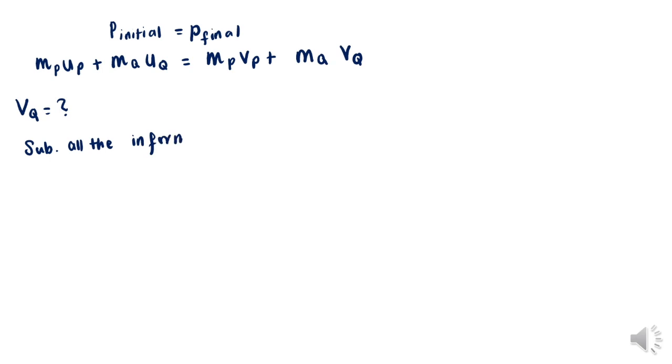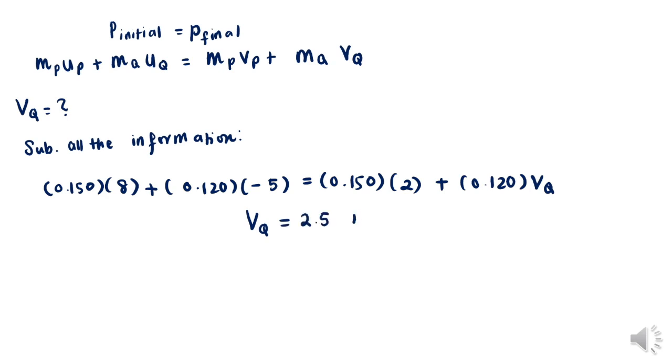We want to find VQ. Substitute all the information given into the equation above. The answer we get is VQ equals 2.5 meters per second. Since it's positive 2.5 meters per second, this means it's moving to the right, in the same direction as P.